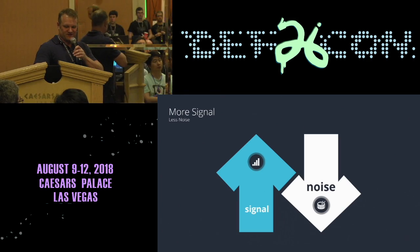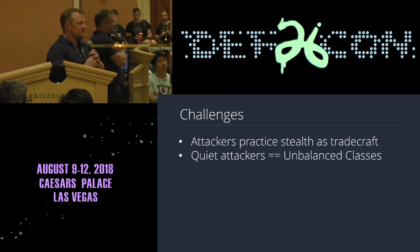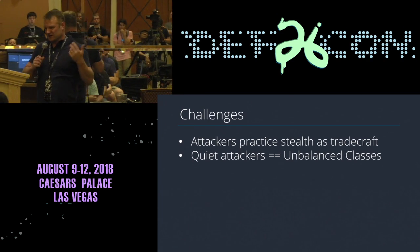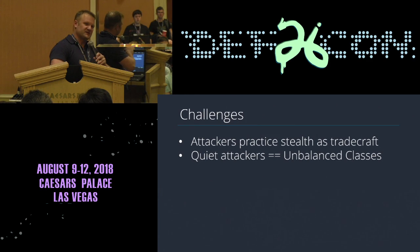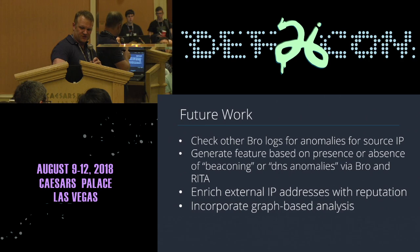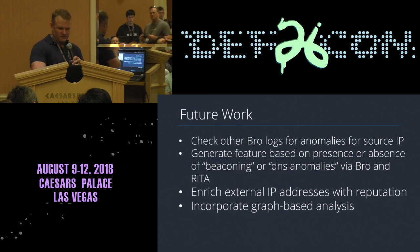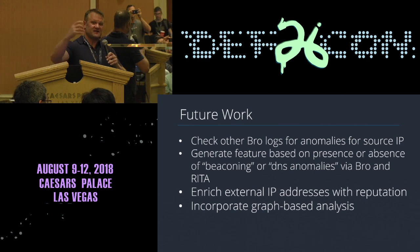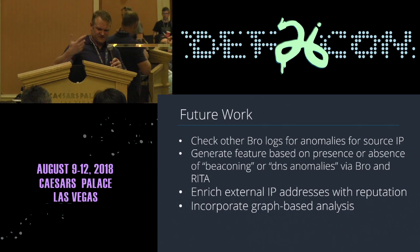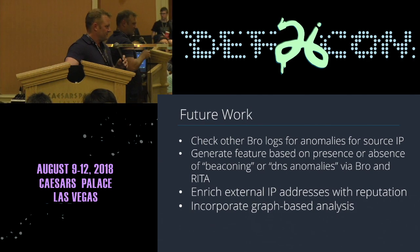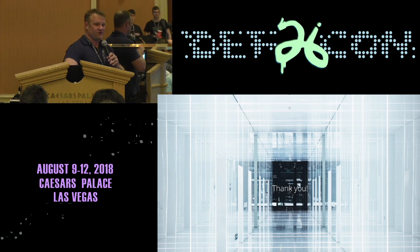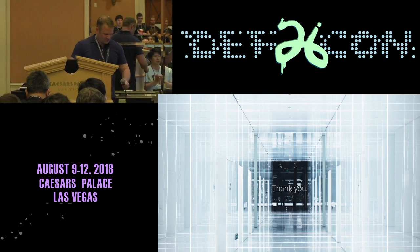We need more signal, less noise. The more stealthy attackers are, the fewer footprints and contacts they leave, which makes it harder to hook into something. For future work: looking at other Bro logs, generating features based on the presence or absence of beaconing, taking the insight from RITA from Black Hills Information Security — your Offensive Countermeasures now — and enriching that, plus enriching IP addresses. Also very excited to look at Neo4j and graph history. Thank you very much for coming out on a Sunday morning — I appreciate your time, and I hope you have a great rest of the conference.